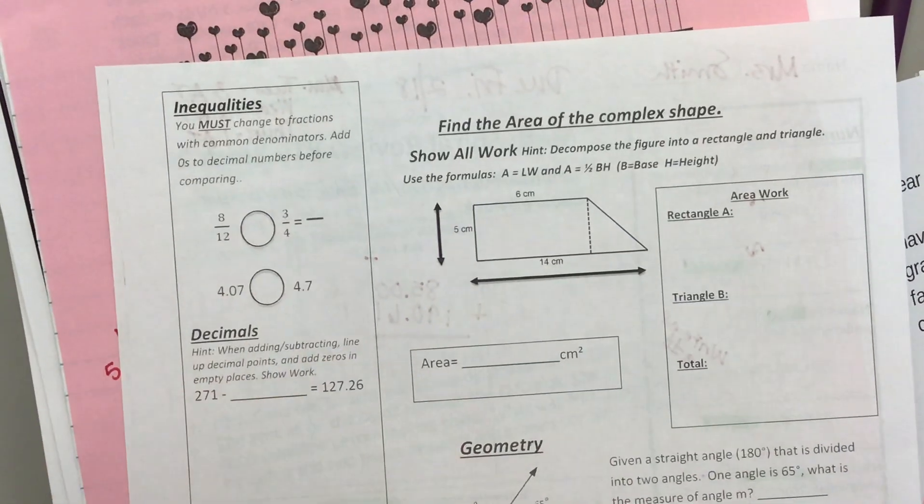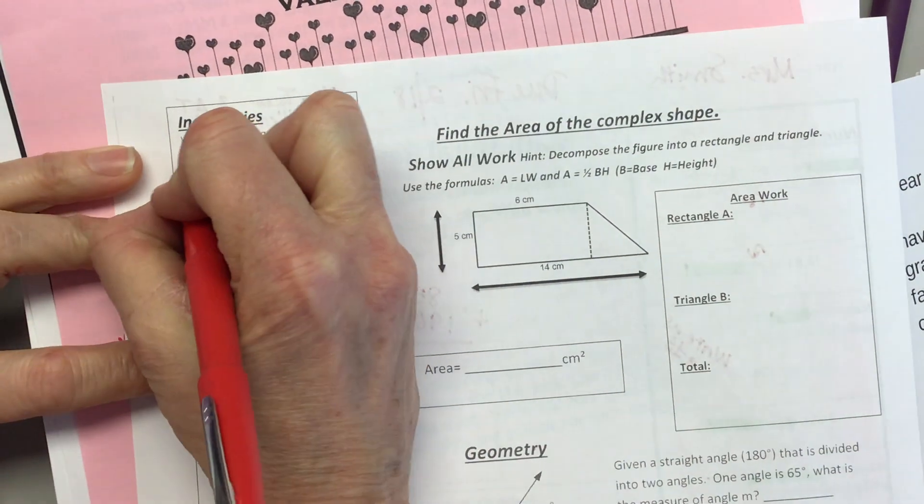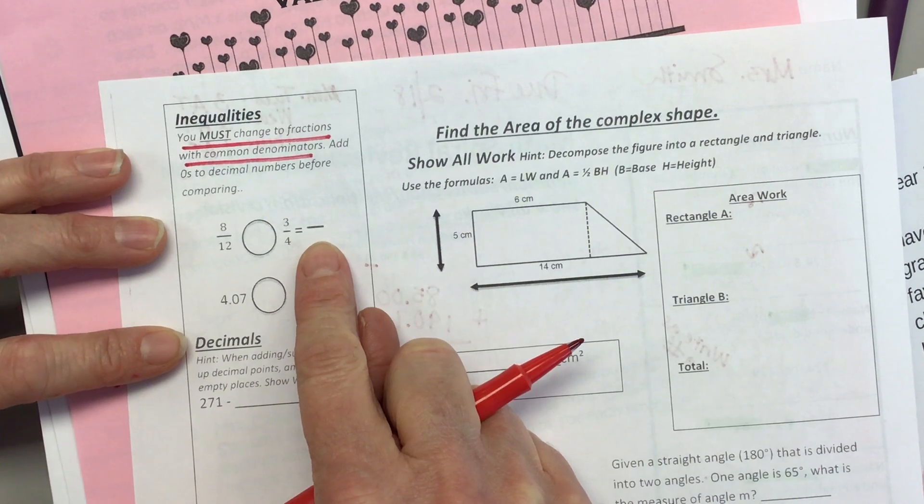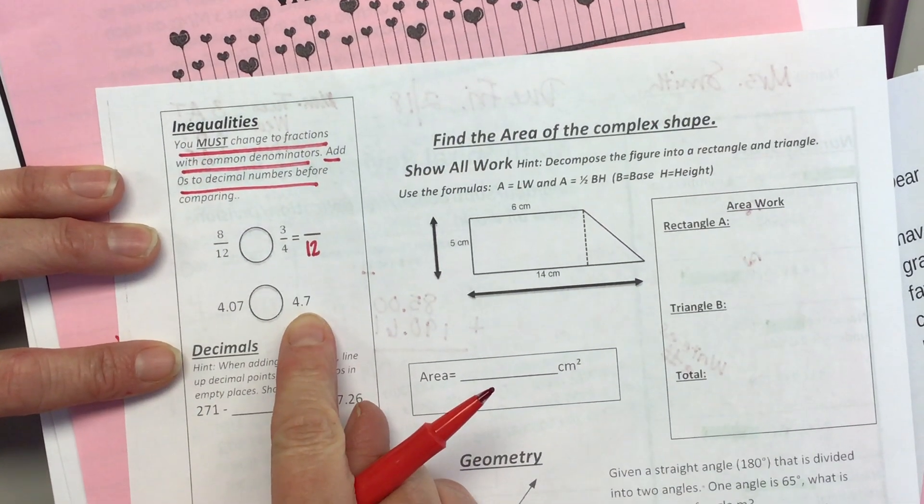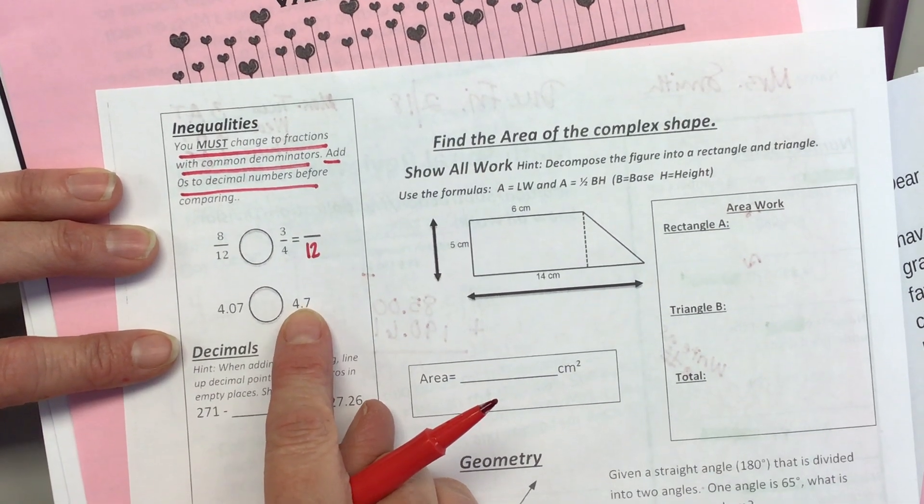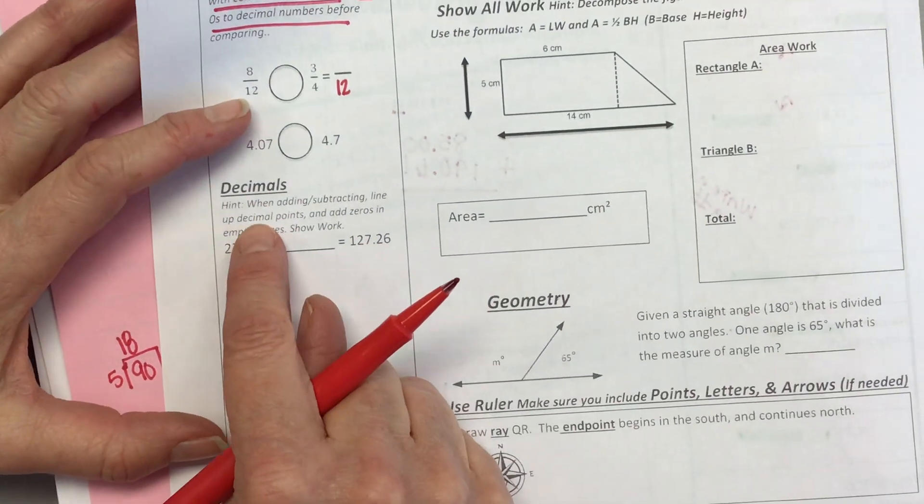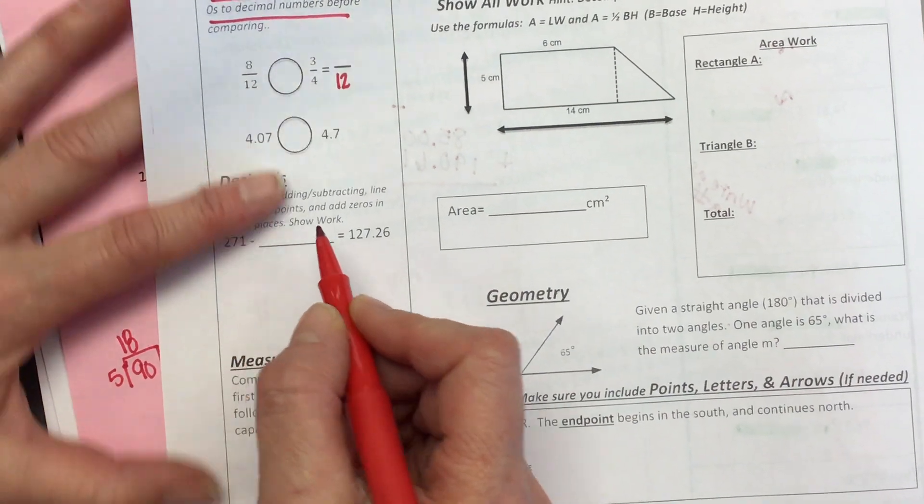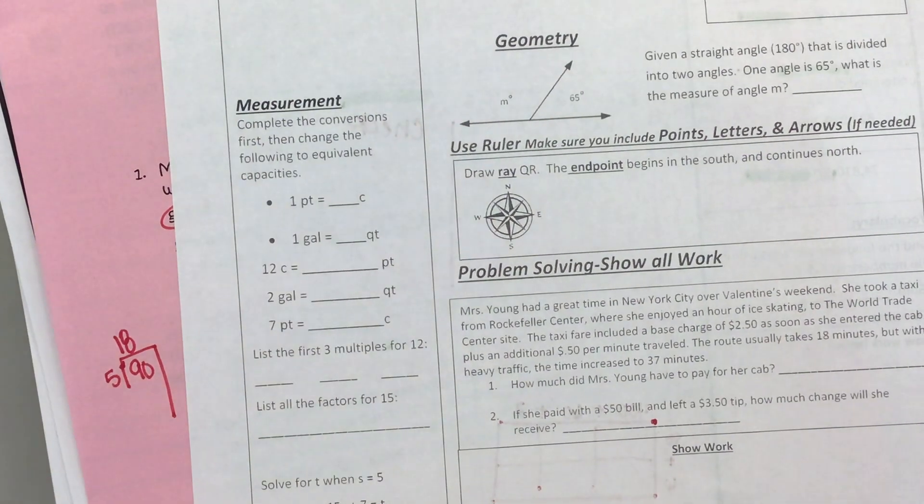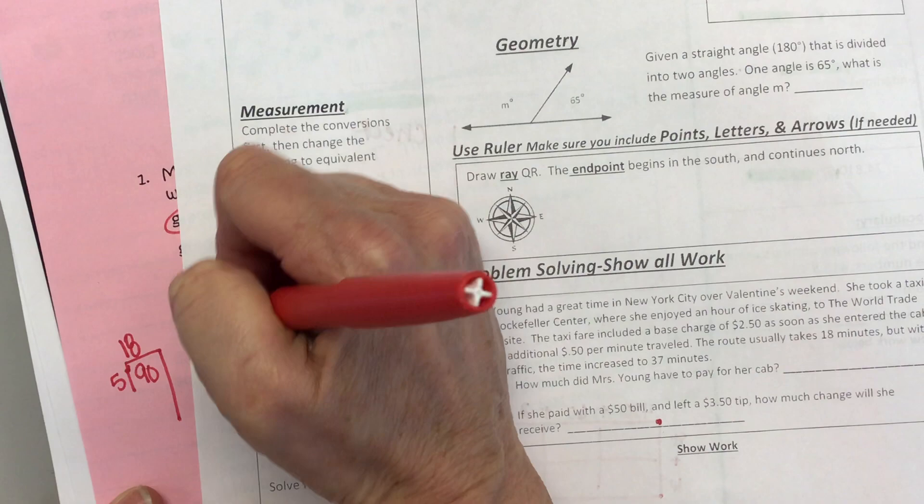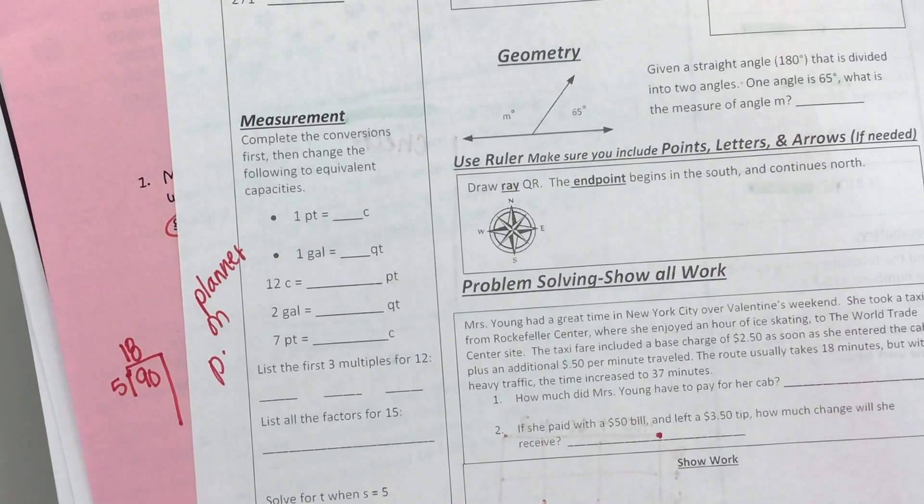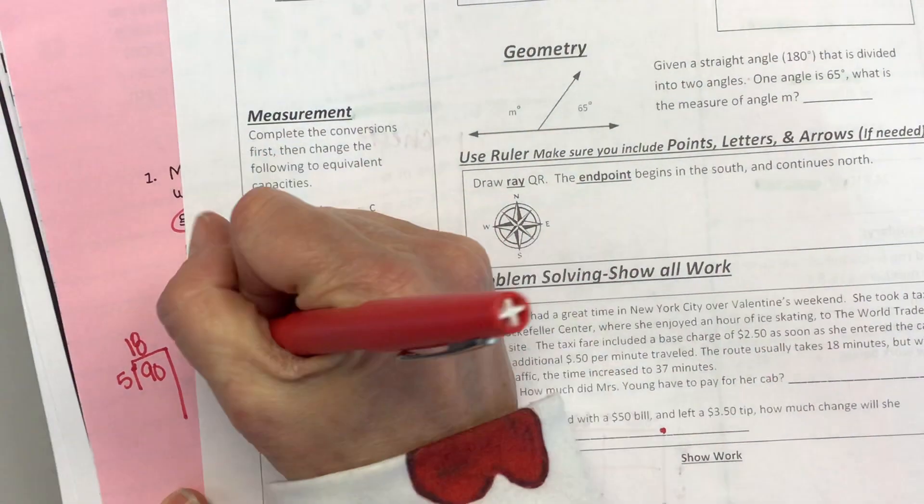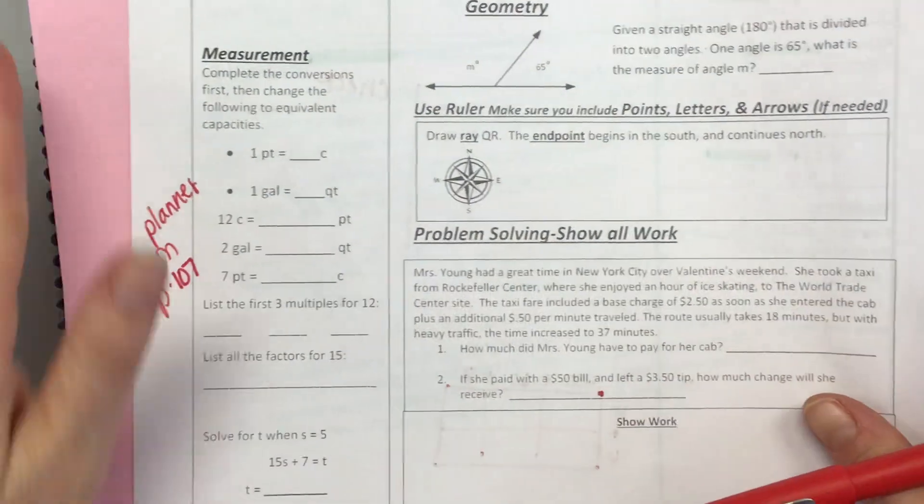Turning that over, I am counting wrong this week if you don't follow these directions. You must change it to fraction with a common denominator. So what's our denominator going to be on this one? 12. And you must add the zeros to the decimal number before comparing. If you do not do that, it's going to be counted wrong. Here you need to figure out how to do the missing number for that decimal. This measurement, you can find the conversions in your planner on page 107.